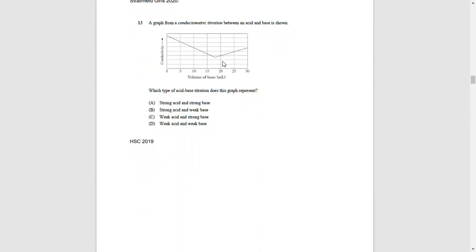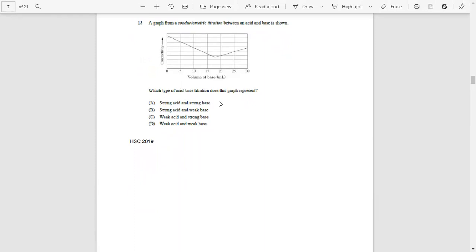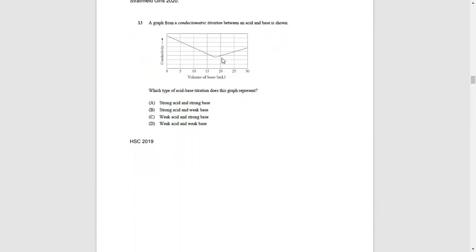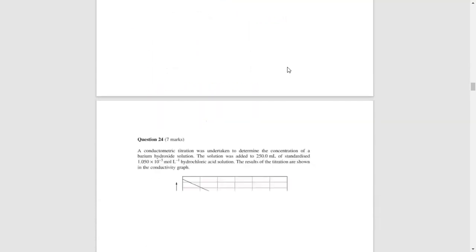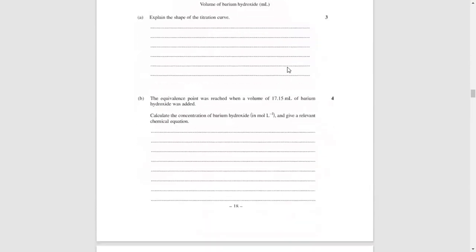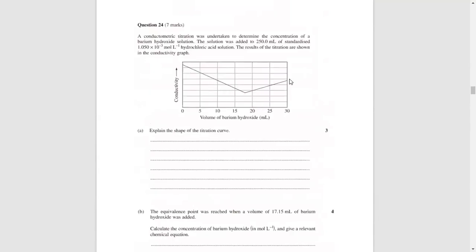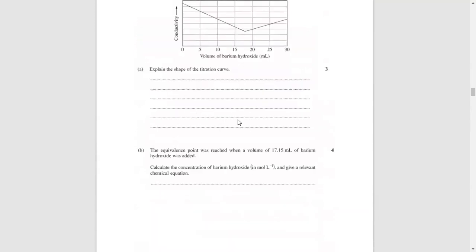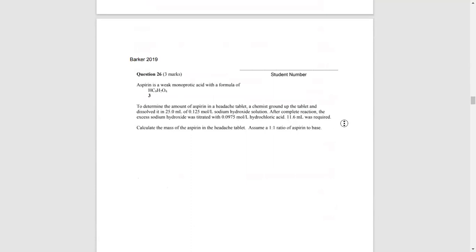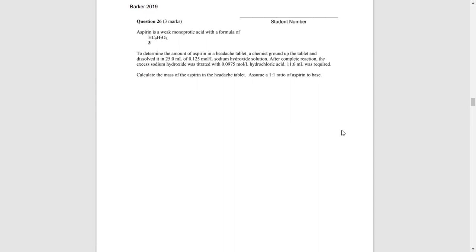For a conductance titration between an acid and a base, the shape is clearly a V shape. As you add more base, conductance goes down and then goes back up. This strongly indicates a strong acid and a strong base. If it were not a strong acid or strong base, you'd see a flat region or different curve shape. The V shape occurs because conductivity derives from the concentration of ions — as acid and base react, ions are removed, decreasing conductivity until the equivalence point, after which excess base ions increase conductivity again.